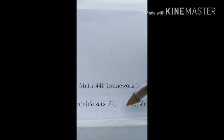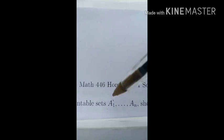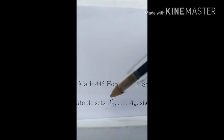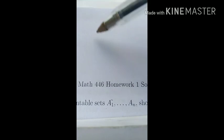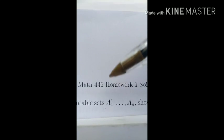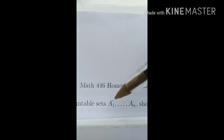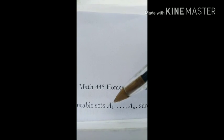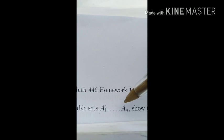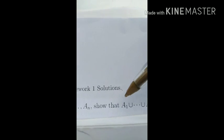So if we have all of these individual countable sets, which means, as we know, 1, 2, 3, 4, up to infinity, it can be counted. The real numbers cannot be counted. If you're not sure, go look up countable and uncountable on YouTube. We're going to show that the union is also countable.